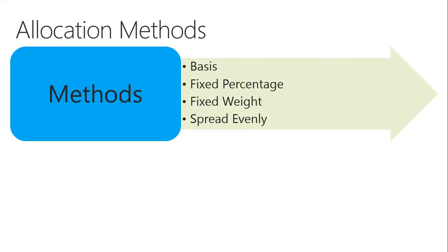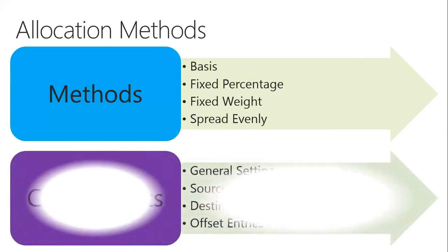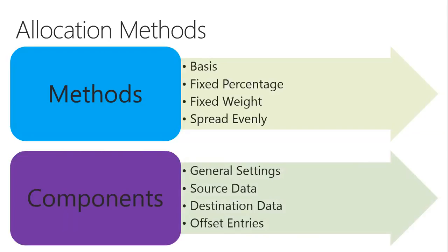The last method is basis. In the case of basis, you can allocate the balance of your account on the basis of the different balances of your other accounts. For example, if you want to allocate distributable profit among your partners or shareholders, you can use basis — according to how many shares they have, you can allocate dividend or profits. The components for allocation methods are four: general setting, source data, destination data, and offset entries.